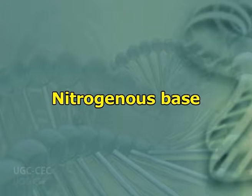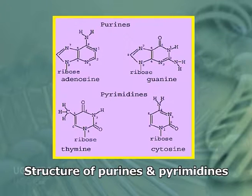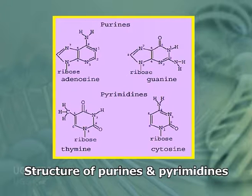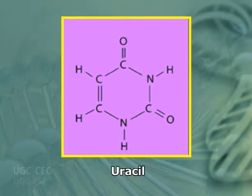Now, nitrogenous bases — the nitrogenous bases are aromatic heterocyclic compounds. DNA and RNA both have four bases, two purines and two pyrimidines, in their nucleotide chains. Both molecules have the purines adenine and guanine, and the pyrimidine cytosine. But DNA has the pyrimidine thymine while RNA has the pyrimidine uracil.